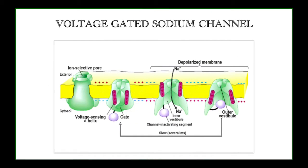Classification of channels on the basis of gates — the first type is the voltage-gated sodium channel. This channel has a specific outer and inner component, a voltage-sensing alpha helix, and a channel-inactivating segment on the cytosol side. When sodium ions are more concentrated outside, the polarized state is established. Depolarization occurs in around 0.1 milliseconds as sodium ions move in, the alpha helix opens the channel, and the channel-inactivating component remains inactive. After sodium ions move in, a positive gradient forms inside, and the channel becomes inactivated and closes.